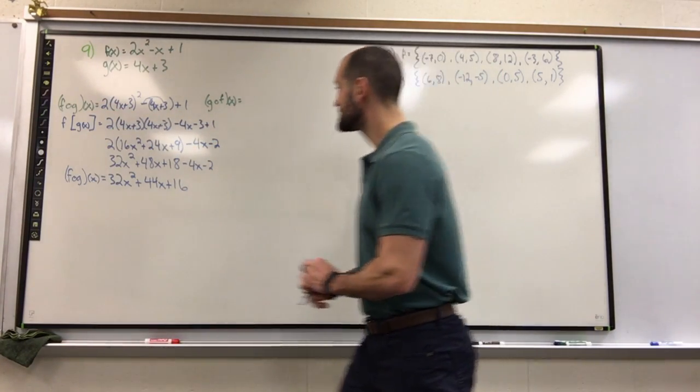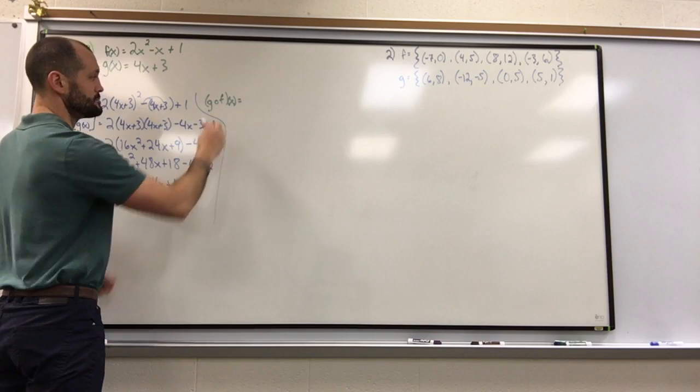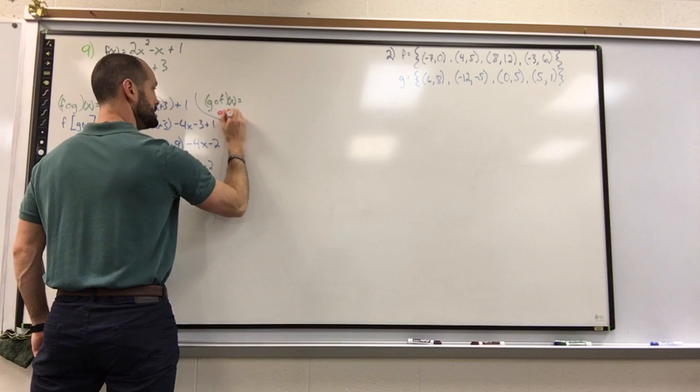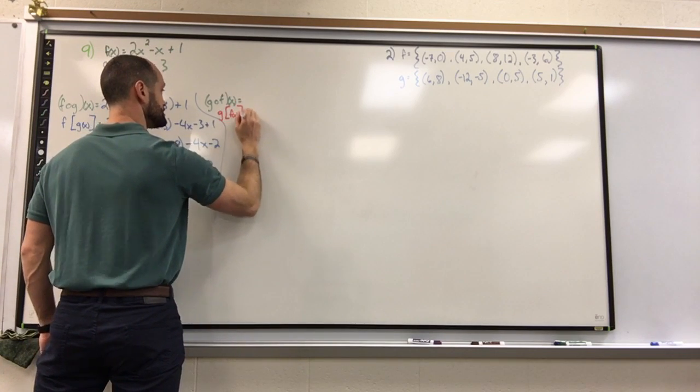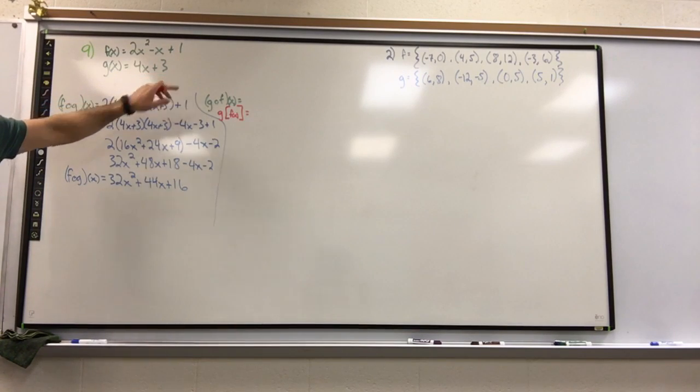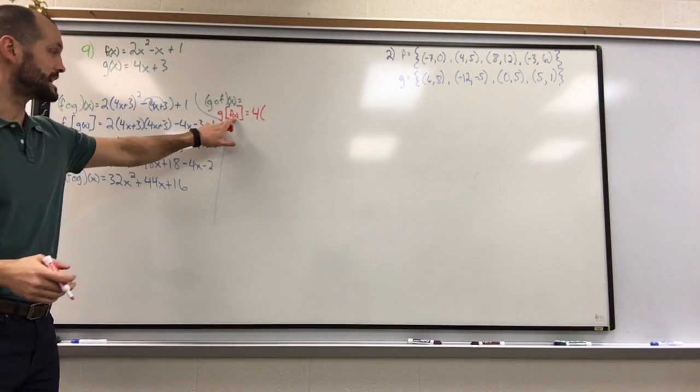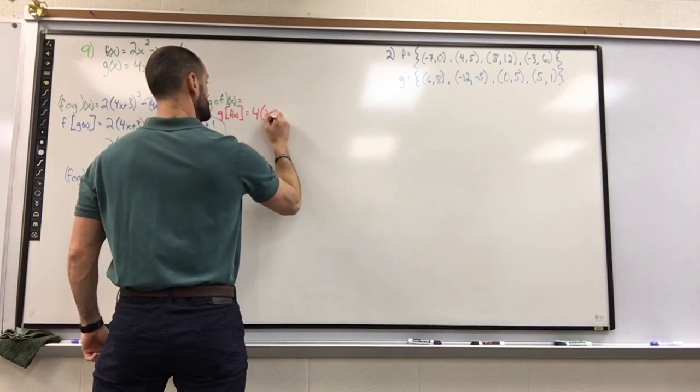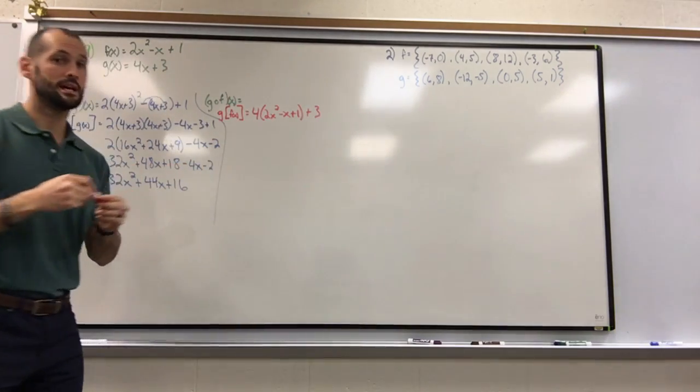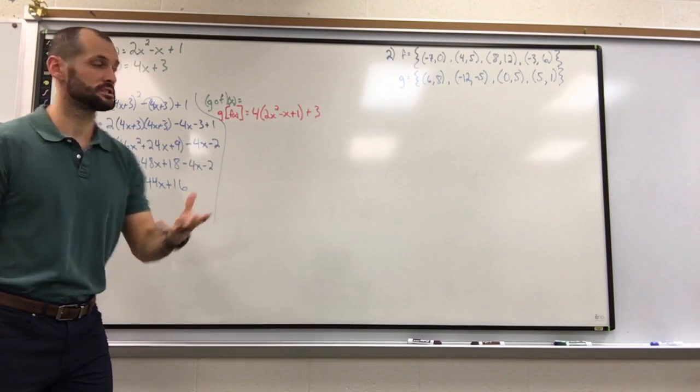Now let's take a look at g of f of x. Notice f is mentioned second, so that is my input. I think of it as g of (f of x), meaning the g function takes 4 times its input and adds 3. So I'm going to take 4 and multiply it by my new input, which is the entire f function: 2x squared minus x plus 1, plus 3. Notice this is the g function: 4 times its input plus 3. The only difference is instead of x being our input, the entire f function is our input.